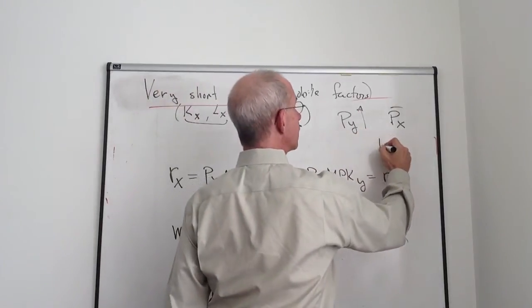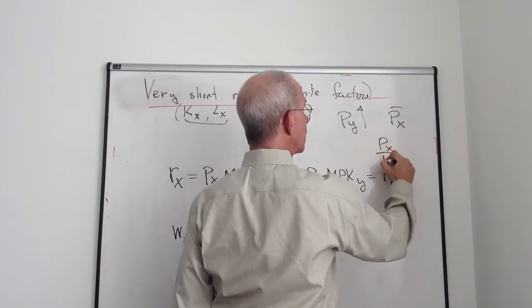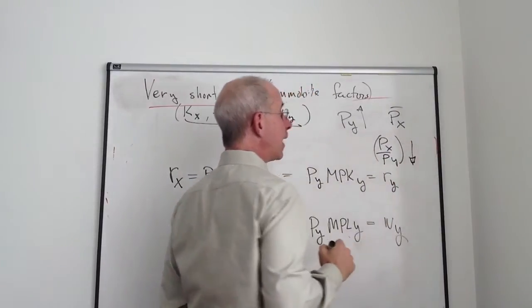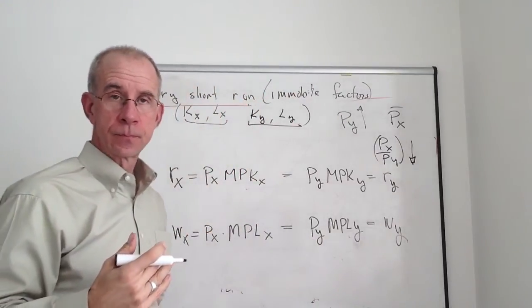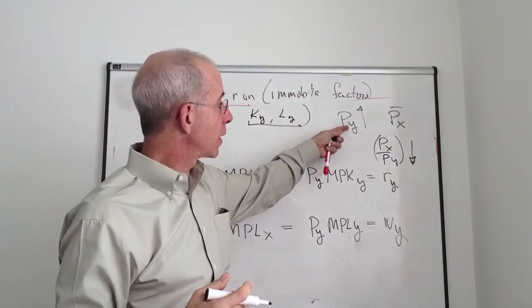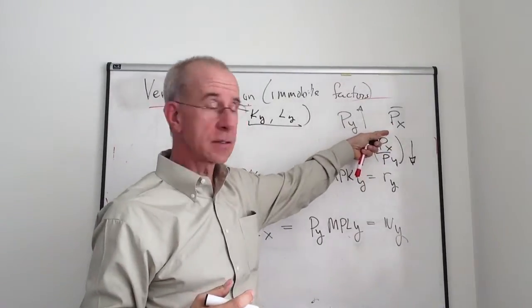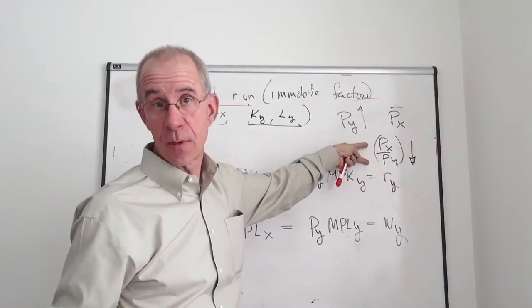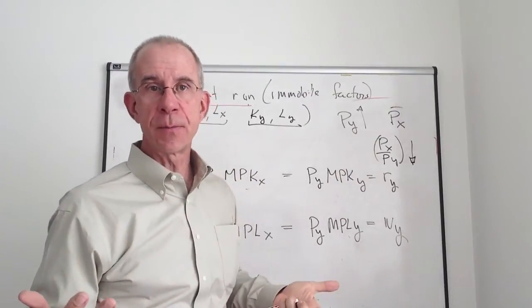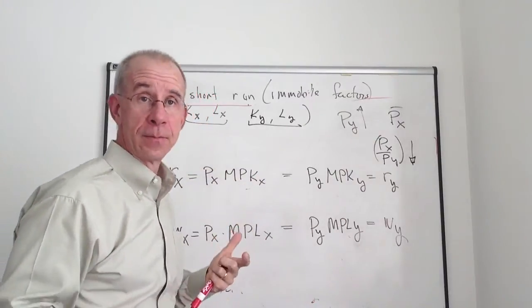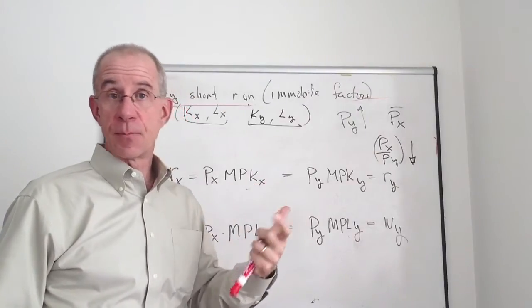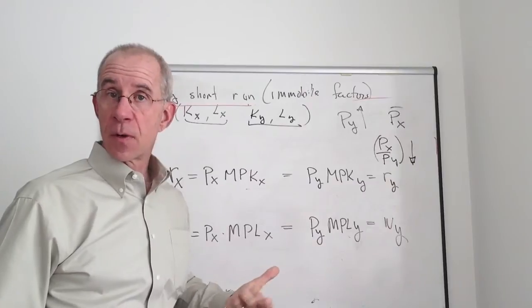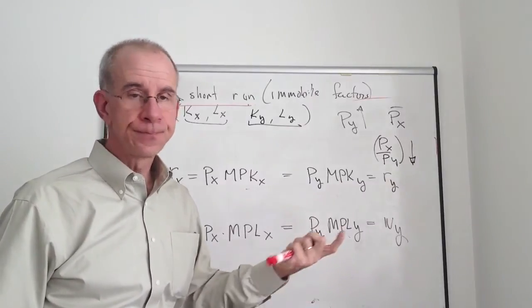What we're talking about here is when the relative price of X goes down. The price of Y going up and the price of X staying the same is another way of saying that the relative price of X has fallen or the relative price of Y has risen. It doesn't matter why. The price of Y could be going up because it's an imported good and there's a tariff, or Y is an exported good and a country has liberalized so we can now export more.